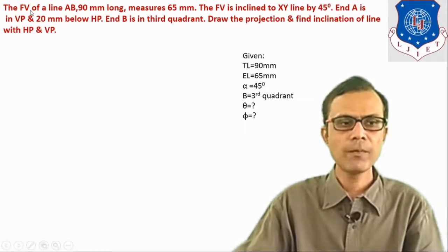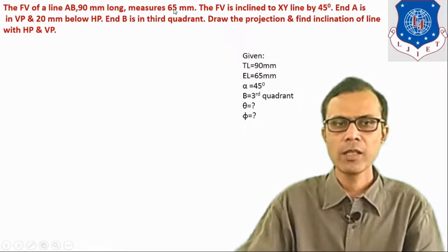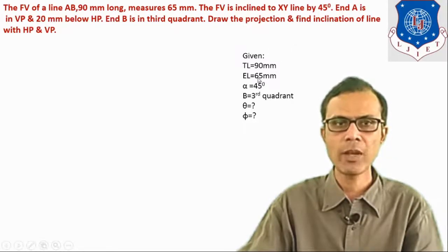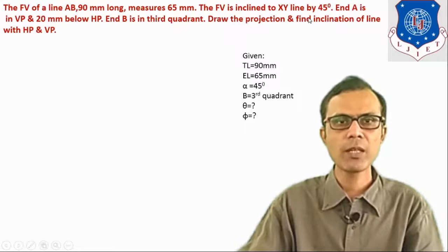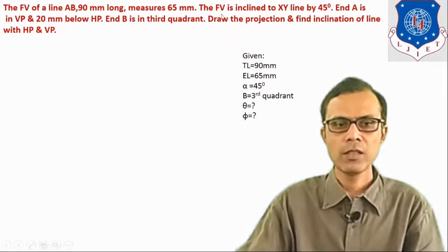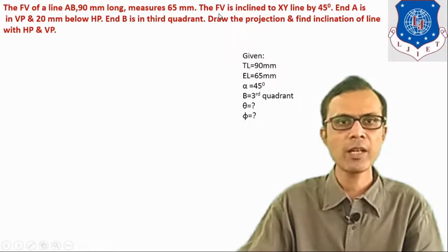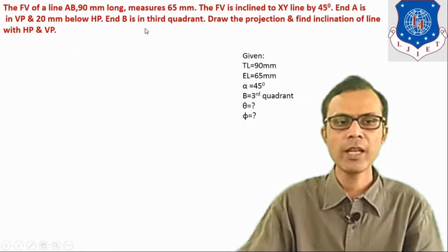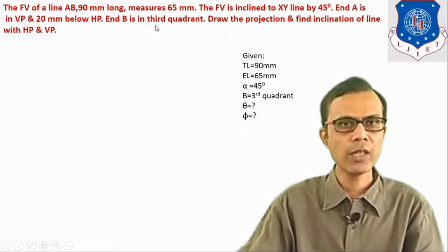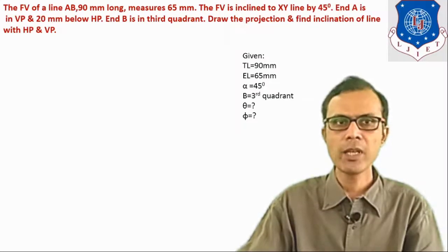The front view of line AB is 90 mm long and measures 65 mm — it means the front view length is 65 mm and the true length TL is 90 mm. The front view is inclined to the XY line by 45 degrees; this is the apparent angle alpha, so alpha is 45 degrees. The position of end A is given. Another end B is in the third quadrant, which means it is below HP and behind VP.